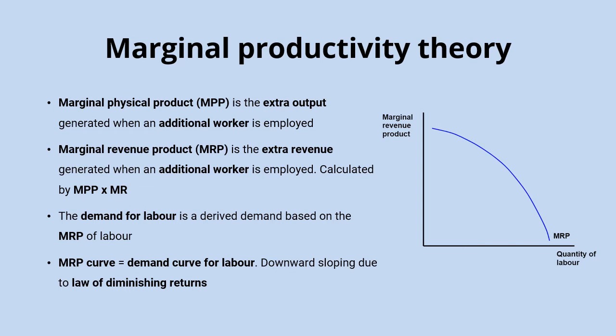The marginal revenue product curve — which shows the additional revenue that those additional workers are bringing in — will be equal to the demand curve for labour. We can label the y-axis as wage, and that's what we will label it when we carry on into labour markets. We can label our MRP curve as being the demand curve for labour, and that's downward sloping because of the law of diminishing marginal returns.